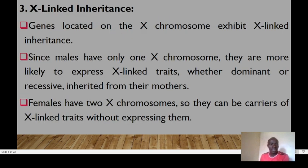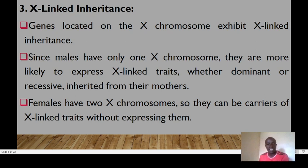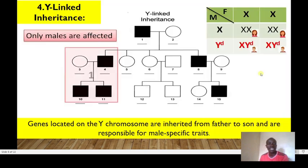For X-linked inheritance, genes are located on the X chromosome. Since males only have one X chromosome, they are more likely to express X-linked traits — whether dominant or recessive — inherited from their parents. Females have two X chromosomes, so they can only be carriers of X-linked recessive traits without expressing them.